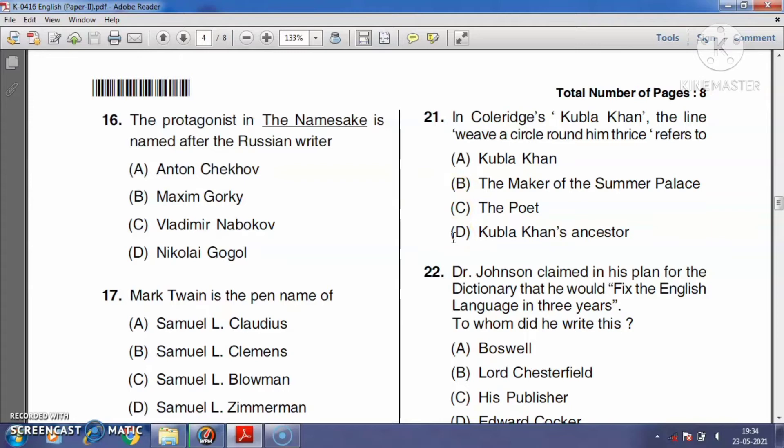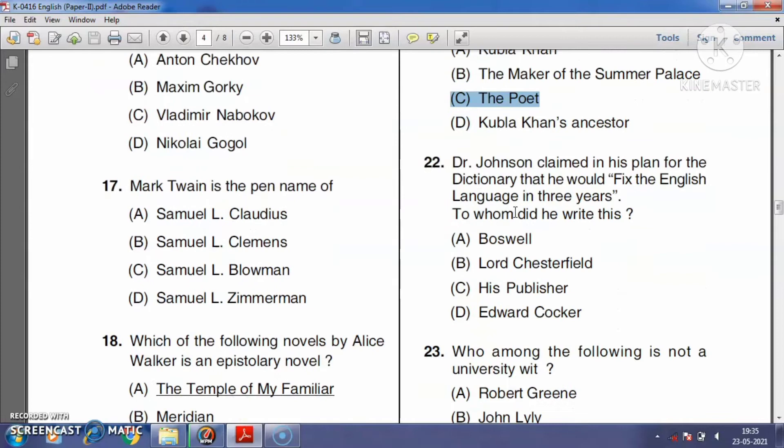Question number twenty-one: In Coleridge's 'Kubla Khan,' the lines 'Weave a circle round him thrice' refers to Kubla Khan, the maker of the summer palace, the poet, or Kubla Khan's ancestor? 'Kubla Khan or A Vision in a Dream' is a poem by S.T. Coleridge, published in 1816. In the first part of the poem, the speaker describes the beauty of Xanadu, the summer palace of Kubla Khan. So the right answer is option C, the poet.